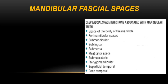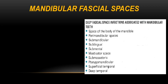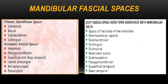According to anatomical location, we divide them into the space of the body of the mandible — the perimandibular spaces — or the masticator space. The perimandibular spaces are the submandibular, sublingual, and submental spaces. The masticator spaces are located in, around, or between the different muscles of mastication: the submasseteric, pterygomandibular, superficial temporal, and deep temporal spaces. According to the order of infection, primary mandibular spaces include the submental, buccal, submandibular, and sublingual.